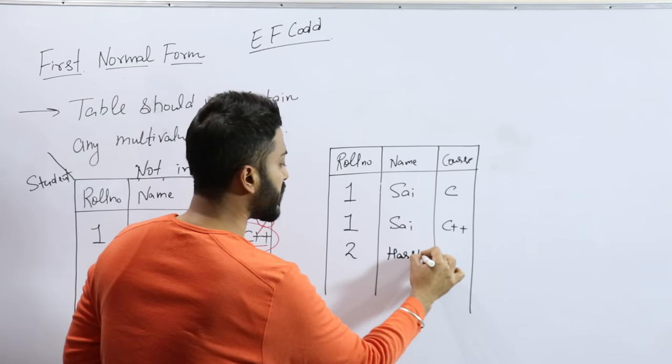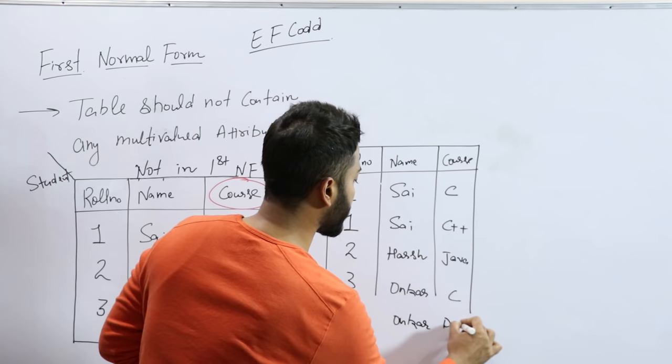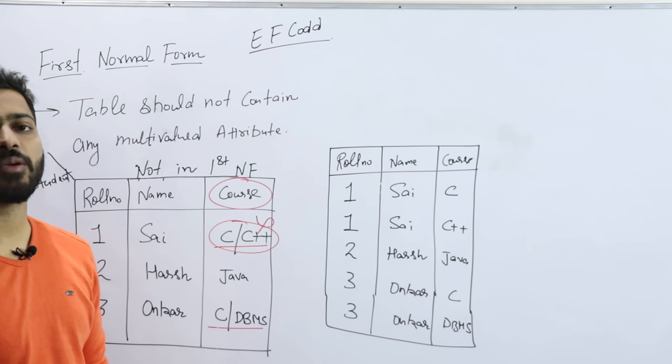Two Harsh Java, three Onkar C, three Onkar DBMS. So now the representation will be like this. I have divided the table like that - for a row number that has multiple courses, I have written it multiple times.